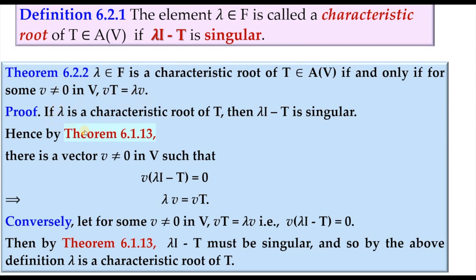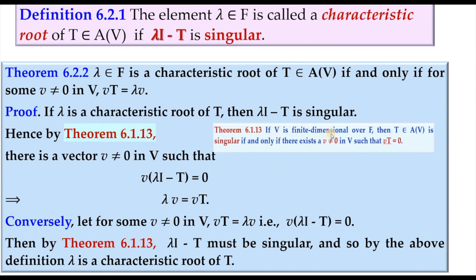To prove this, we first assume lambda to be a characteristic root of T, which means lambda I minus T is singular by definition. By theorem 6.1.13, since V is finite dimensional over F, T is singular if and only if there exists a non-zero vector V in V such that the image of V under T is the zero vector. So lambda I minus T being singular gives us a non-zero vector V such that its image under lambda I minus T is zero, using the definition of addition in A(V) and the fact that lambda I and T are homomorphisms.